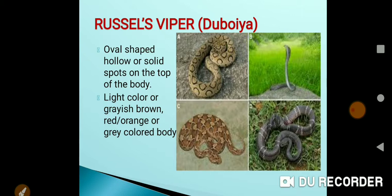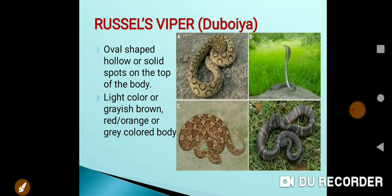The Russell's Viper, also called Daboia, is red, orange, black, or brown in color. Its distinguishing feature is oval-shaped spots on the top of its body. These oval spots are easy to identify in pictures.